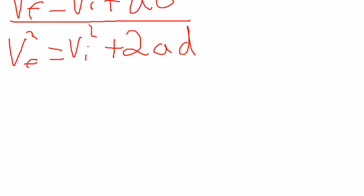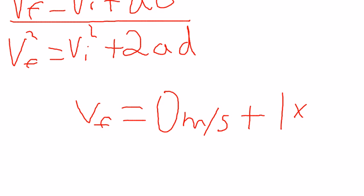So you just have to plug in the numbers. We've got the final velocity which we don't know yet, that's what we're looking for. It is equal to 0 meters per second plus 1 times the distance which is, sorry, the time which is 60.